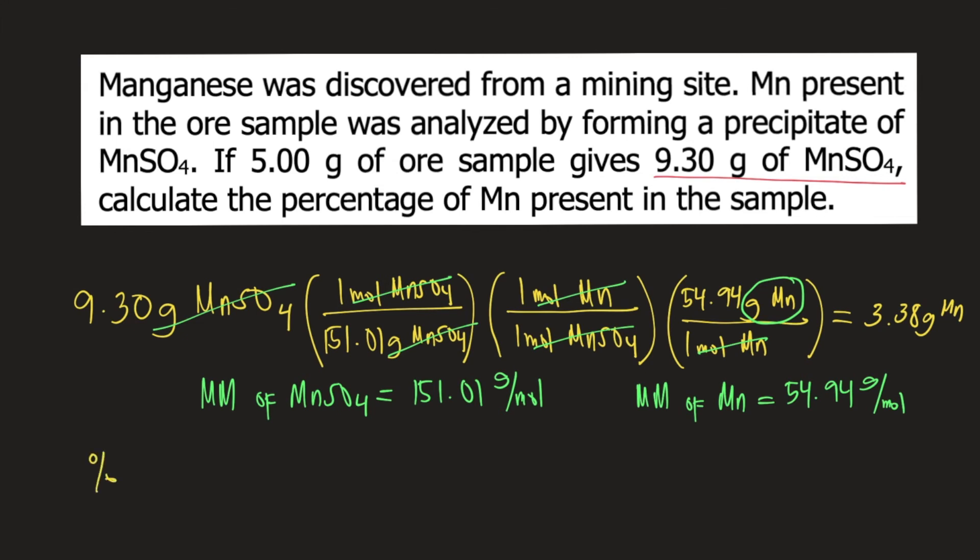So the ore sample contains 3.38 grams of Mn. So if you want to compute for the percent of Mn present in the ore, that will be the mass of Mn divided by the mass of ore times 100. So if we substitute the numbers, that would be 3.38 grams divided by 5.00 grams because the mass of ore according to the problem is 5.00 times 100. And if you plug this into your calculator, this is equal to 67.6%. So the answer to this question is 67.6%.